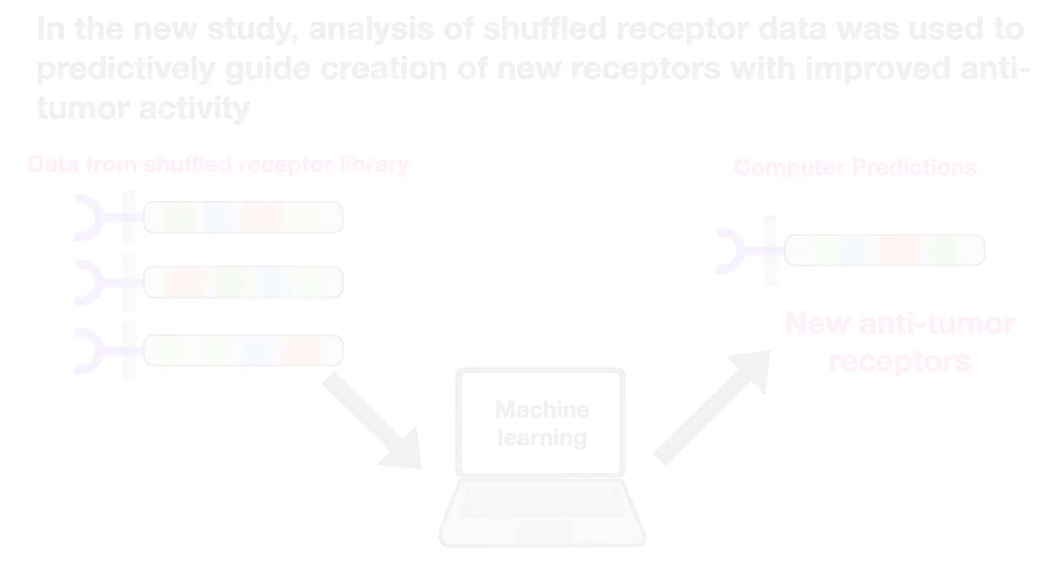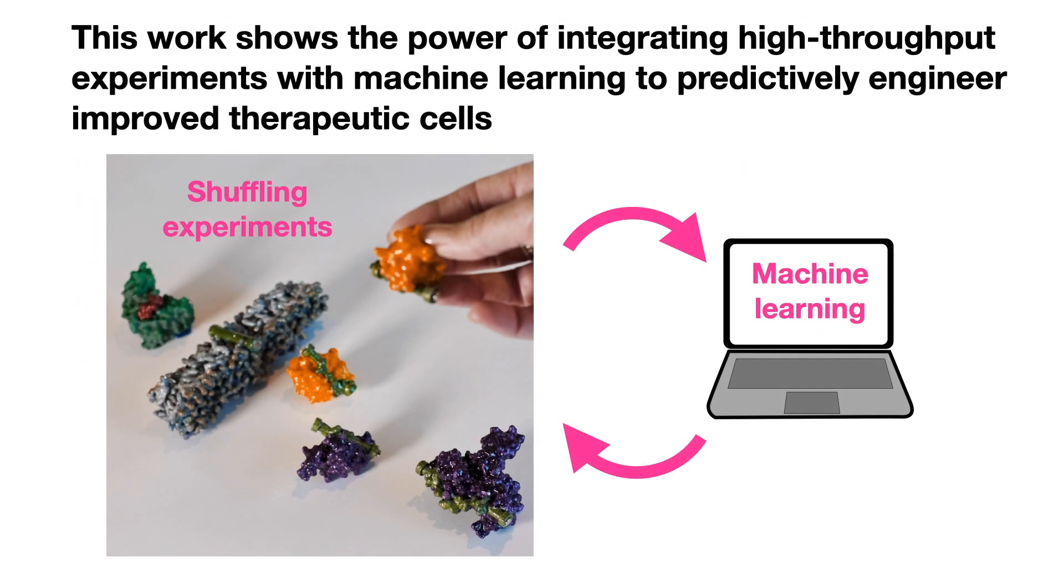This work shows the power of integrating high-throughput experiments with machine learning to predictively engineer improved therapeutic cells.